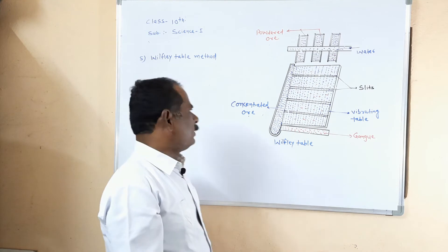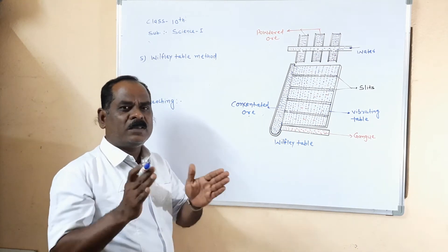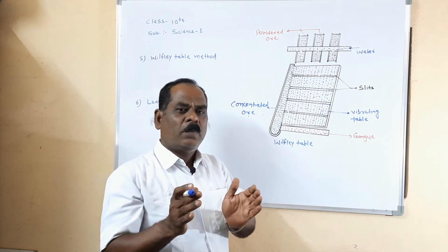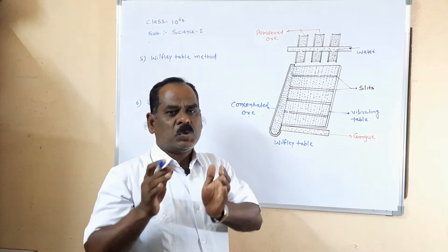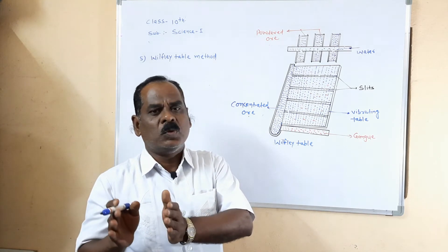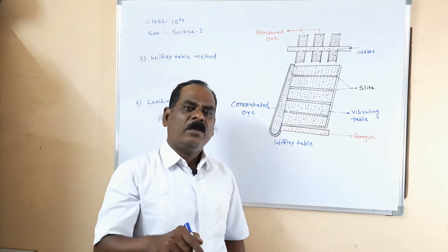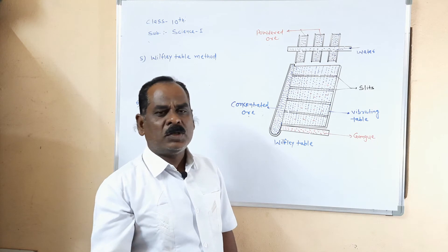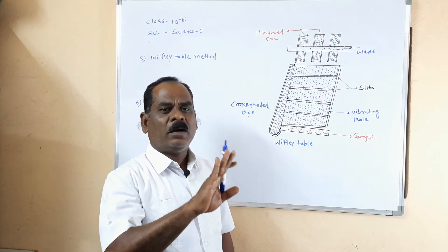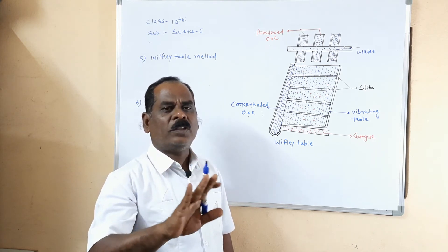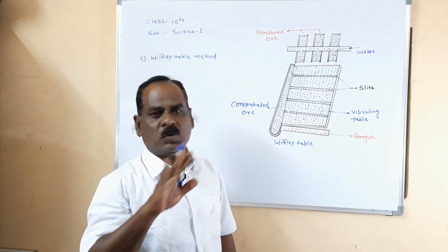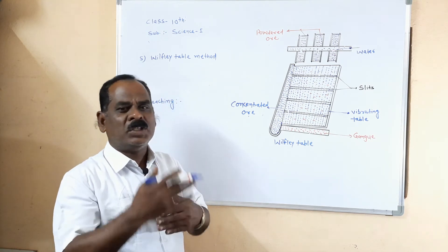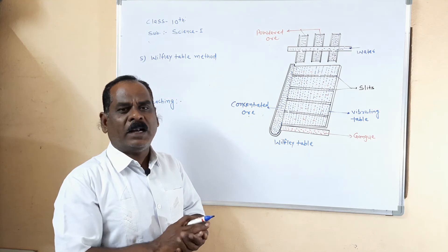The last process is the leaching process. In the leaching process, the powdered ore is soaked in a suitable chemical solution for a long time. The ore reacts with the chemical solution and dissolves in it, but gangue particles do not react and therefore are not dissolved. We can easily separate the dissolved and undissolved particles using a suitable method like filtration.